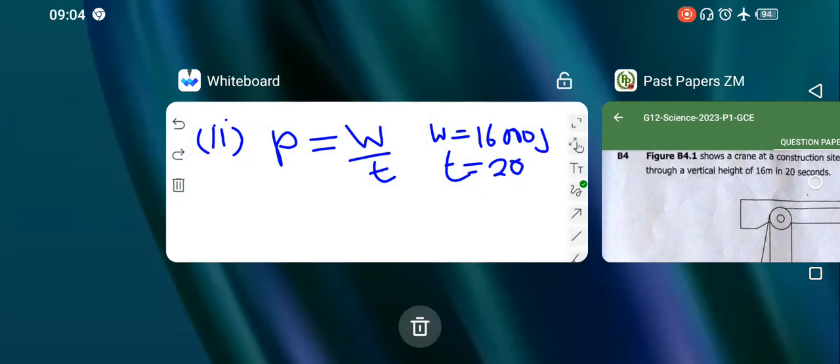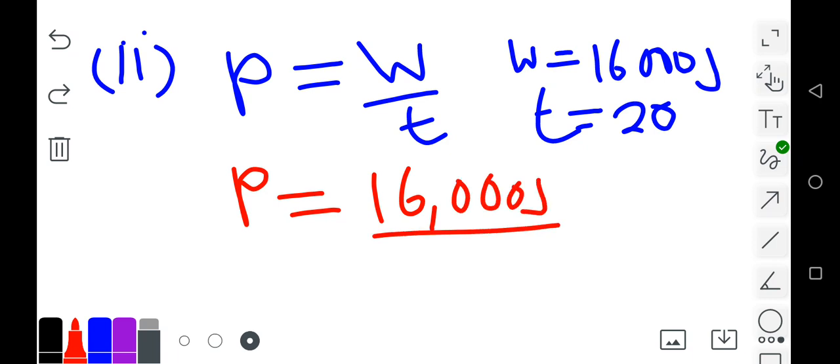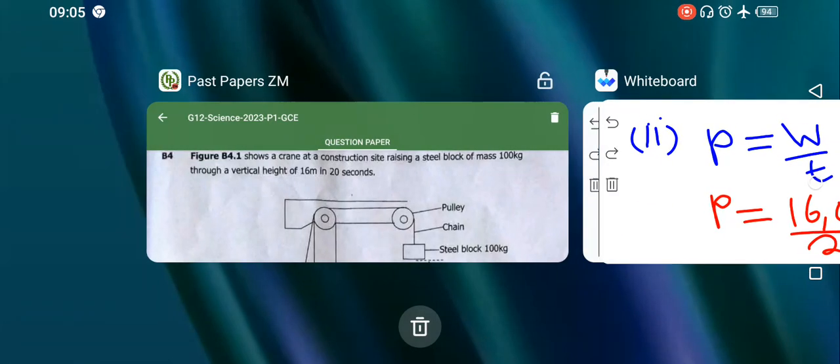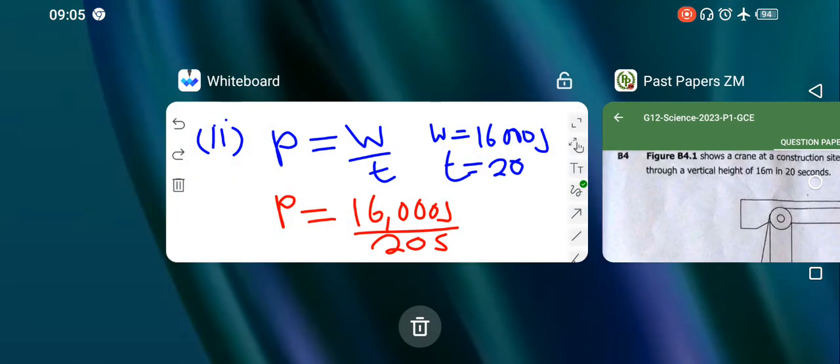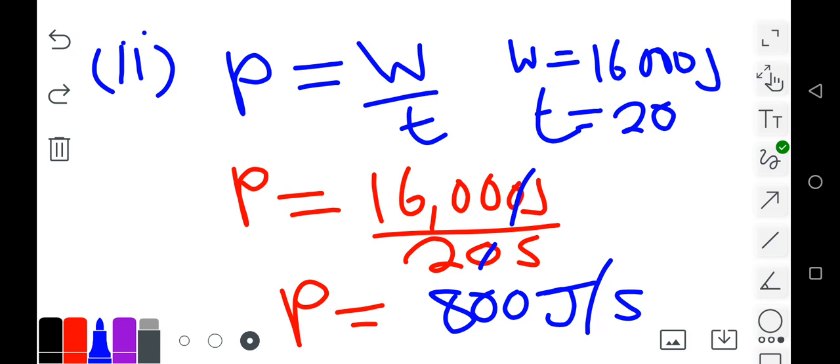So power is our work done, 16,000 joules, divided by 20 seconds. When you use your calculator, you'll find that you get 800 joules per second, or you can just say 800 watts. That's the power output, how much power we are spending on that particular object of mass 100kg.